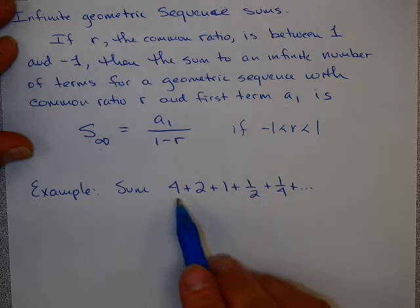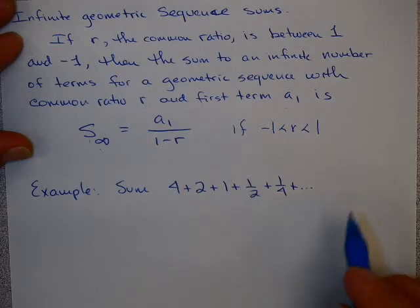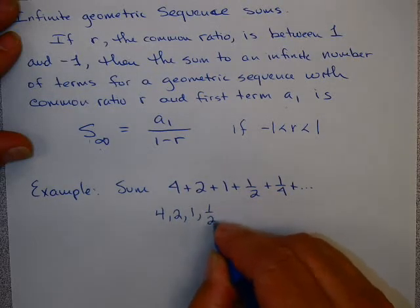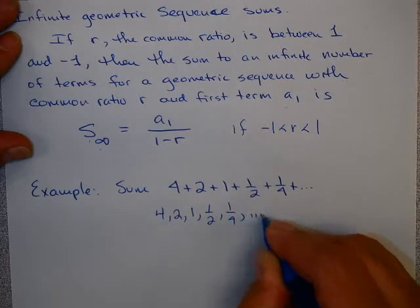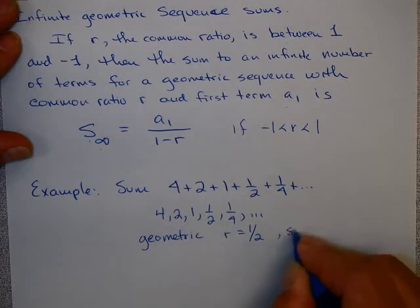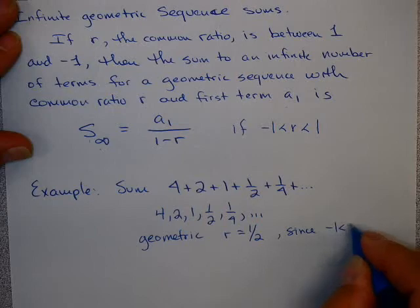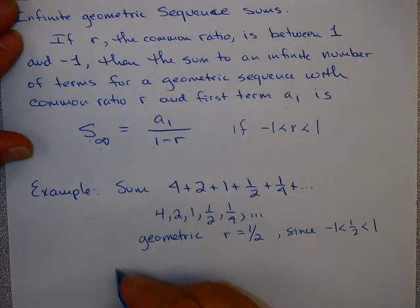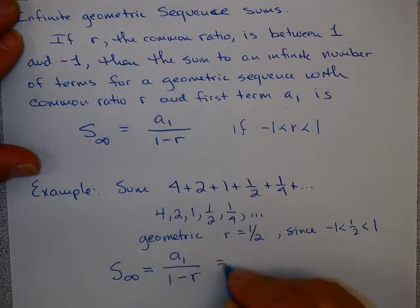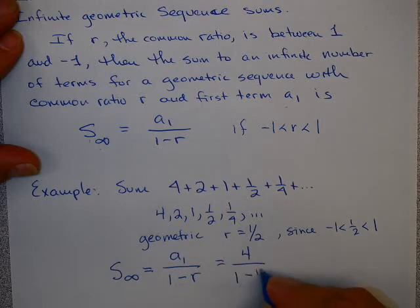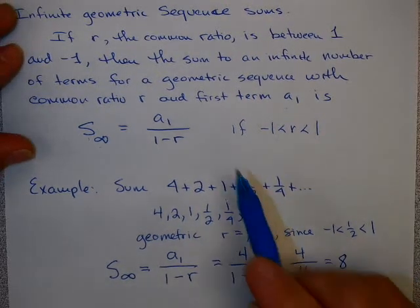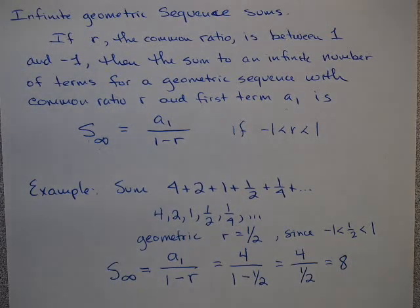This allows you to do a somewhat contradictory seeming problem. For example, this says to add 4 plus 2 plus 1 plus 1 half plus 1 quarter, all the way up to infinity. Notice this is the sum of a geometric sequence with a common ratio of 1 half. Since 1 half is between 1 and negative 1, I can apply the sum of the infinite series. So, I'm going to say the first term over (1 minus the common ratio). That's 4 over (1 minus 1 half). That's 4 over 1 half. And 4 divided by 1 half is 8. If you could actually take this sum out to infinity, it would reach the sum of 8.